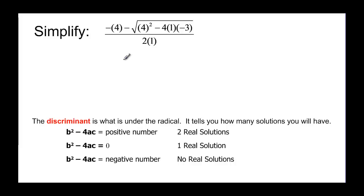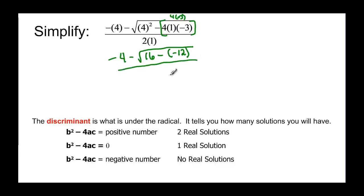So let's simplify — this is like half of a quadratic formula. We have negative 4 minus the square root of, and then this gives us 16, minus 4 times 1 times negative 3. And 4 times negative 3 would be negative 12. All over 2 times 1. So we have negative 4 minus the square root of 16, but minus a negative is the same thing as plus 12, all over 2.